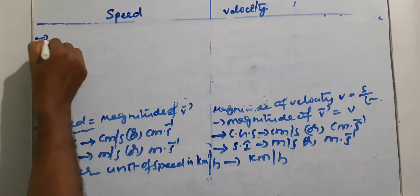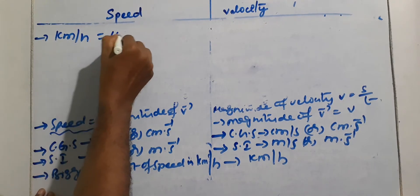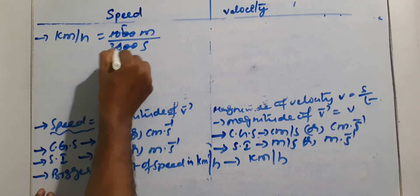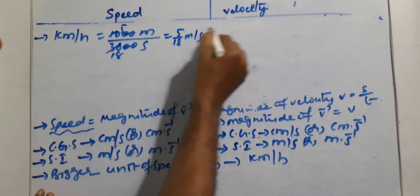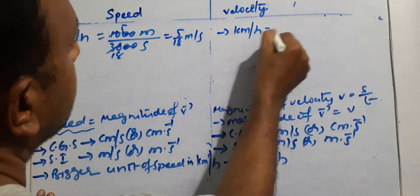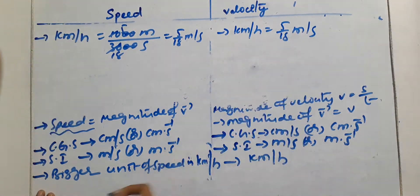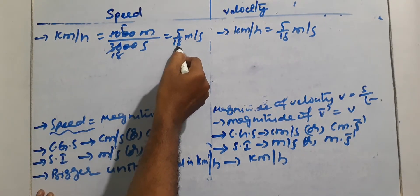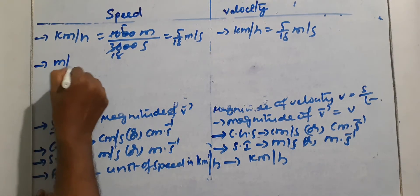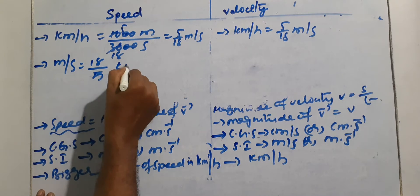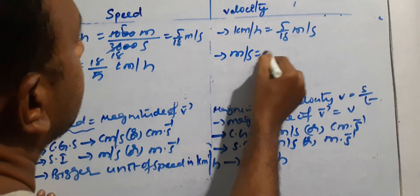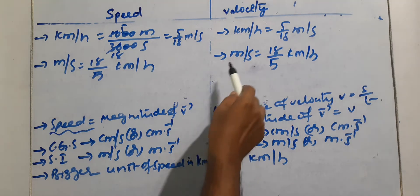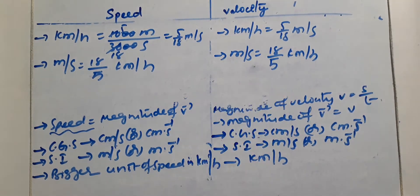1 km per hour equals 1000 meters divided by 3600 seconds, which gives 5/18 meters per second. So to convert km per hour into m per second, multiply by 5/18. Similarly, 1 meter per second equals 18/5 km per hour. To convert m per second into km per hour, multiply the given value by 18/5.